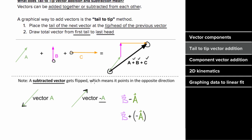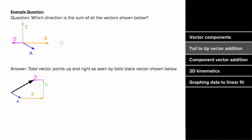What would an example involving tail-to-tip vector addition look like? Imagine we have four vectors and are asked to determine the direction of their sum. We'll use tail-to-tip vector addition.